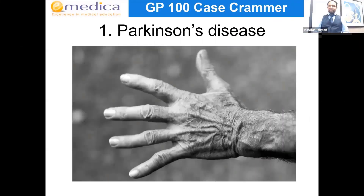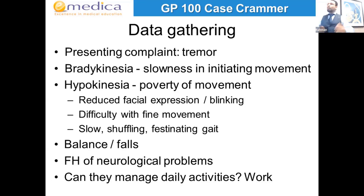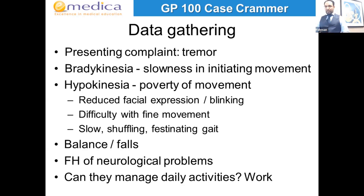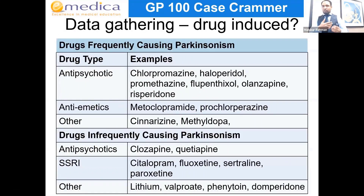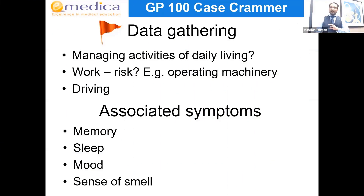The first case we'll look at is Parkinson's disease. In terms of data gathering, typically they might present with tremor, problems with balance, or they may have had a fall and it turns out they've been having tremor or balance problems. Key features to ask about include bradykinesia — do they find it difficult to initiate movement? And hypokinesia, which is poverty of movement. Also ask about medication, because certain prescribed drugs can cause drug-induced parkinsonism, not true Parkinson's disease, and there is a list of common medications that can cause it.